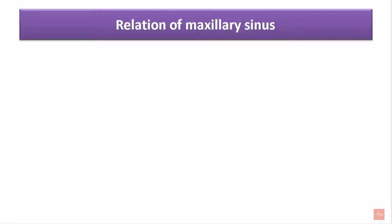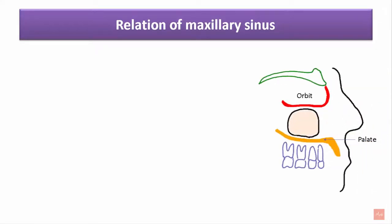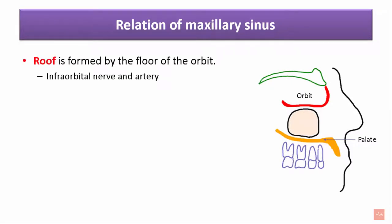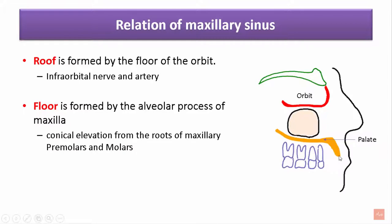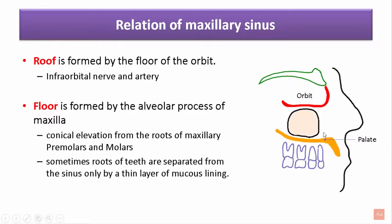Since the maxillary sinus has four sides, a base, and an apex, it is related to numerous structures. The roof is formed by the floor of the orbit, which is traversed by the infraorbital nerve and artery. The floor is formed by the alveolar process of the maxilla, marked by conical elevations from the roots of the maxillary premolars and molars. Sometimes the roots of the teeth are separated from the sinus only by a thin layer of mucous membrane.